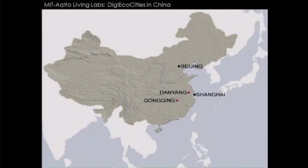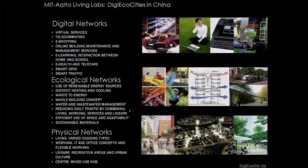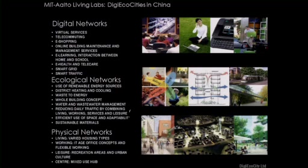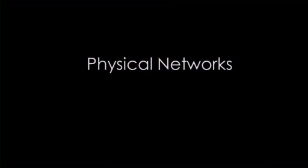We're just beginning to work on two new so-called eco-cities in China, in a partnership with Aalto University funded by Tekes, the National Funding Agency of Finland. They're two new cities of 100,000 each, intended to be a prototype. The Finns are putting up 60% of the equity and they're motivated to do this right. There are three types of networks they're thinking about: the digital networks, the ecological networks, and the physical networks.